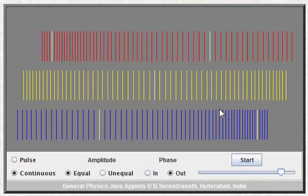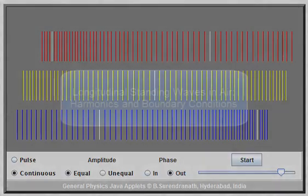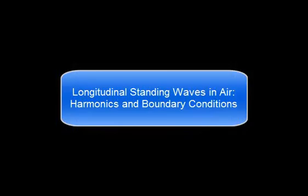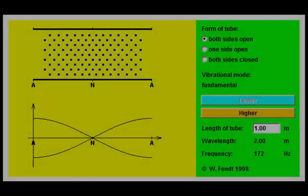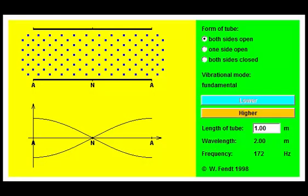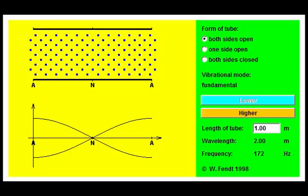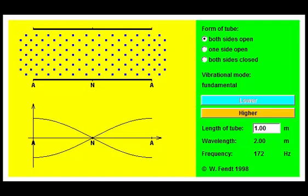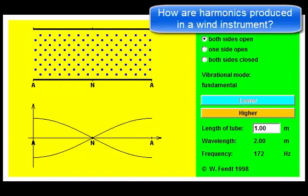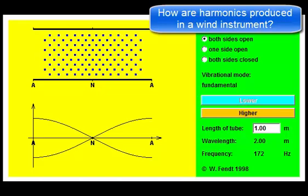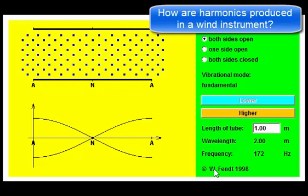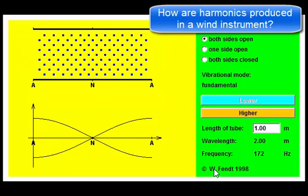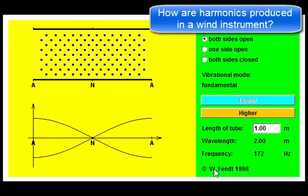We're going to look a bit more carefully now at the types of harmonics that can be produced in a pipe when we have a standing wave happening. We can produce longitudinal standing waves with longitudinal waves of equal amplitude and frequency traveling in opposite directions, and we're now going to explore this concept by looking at a sound produced in a pipe — something like a flute, a clarinet, or an organ pipe.